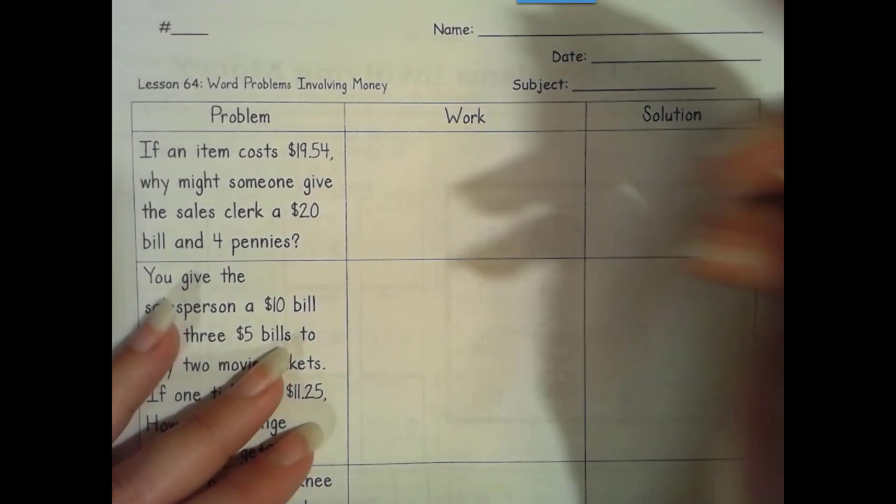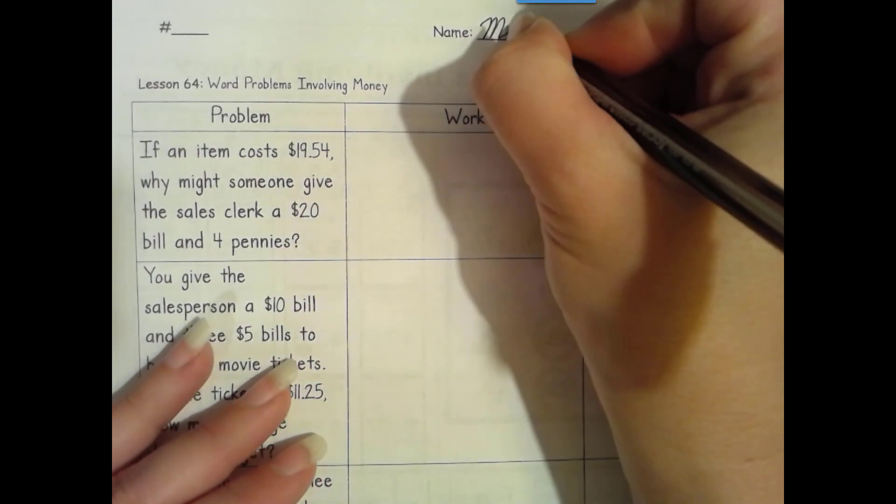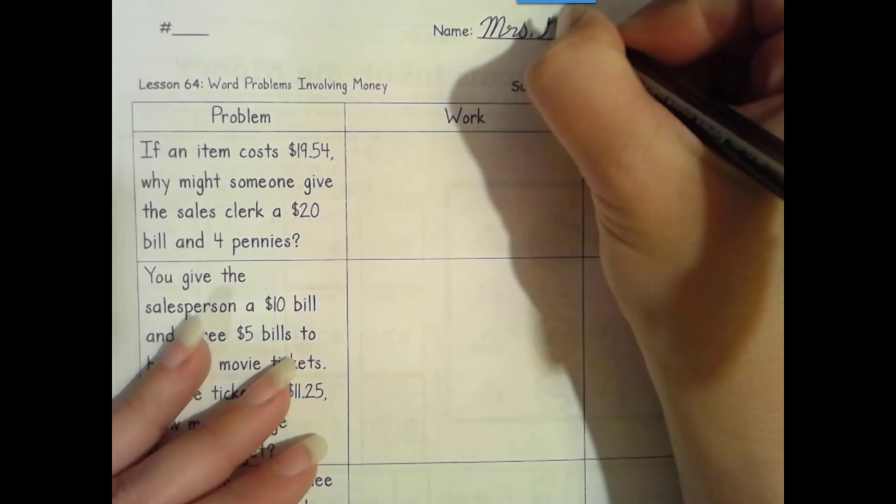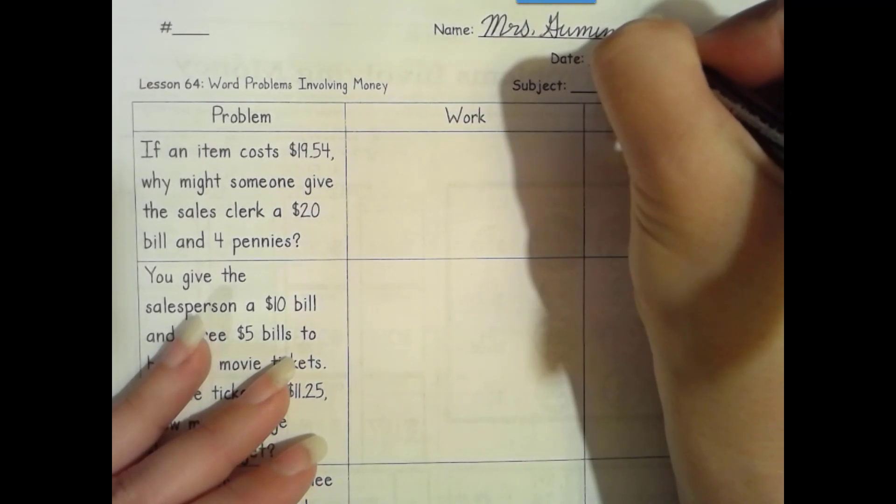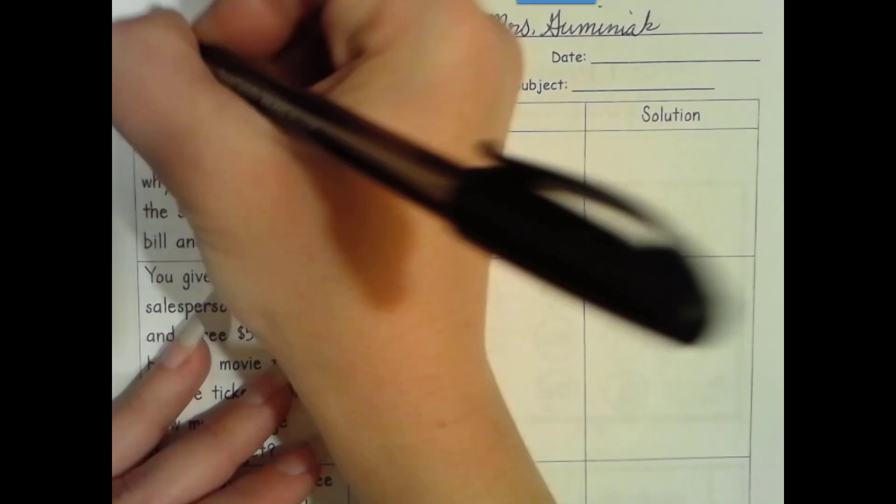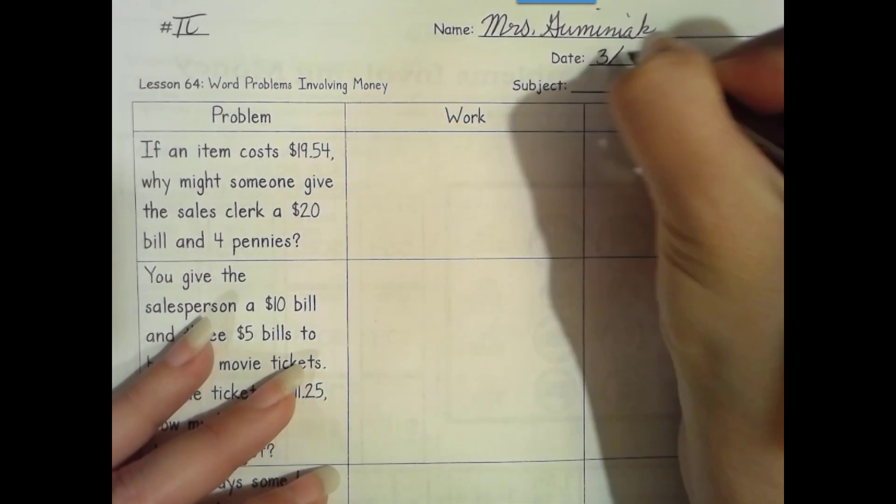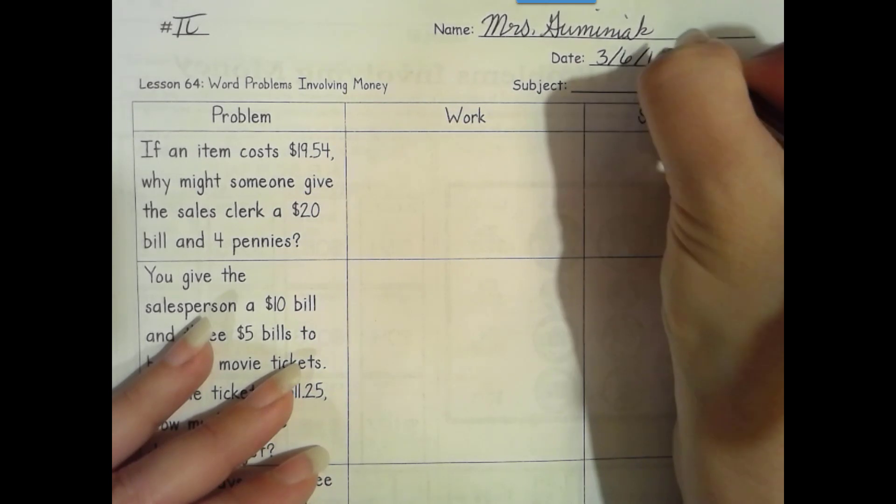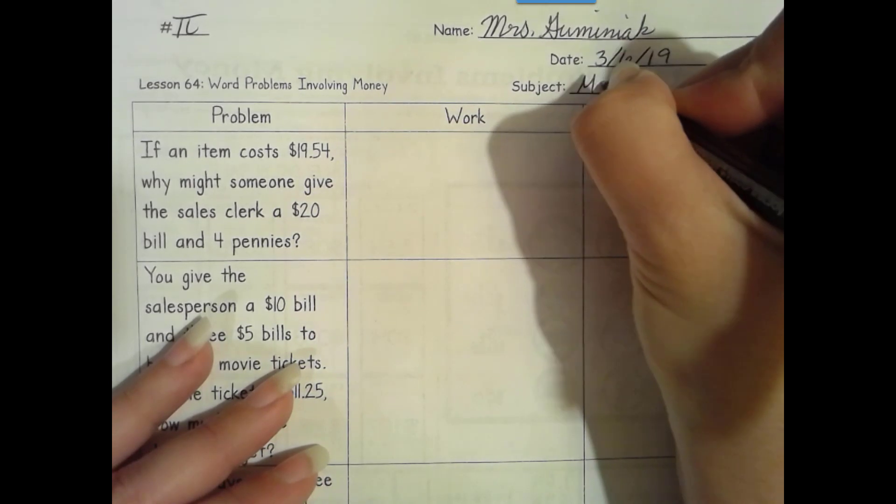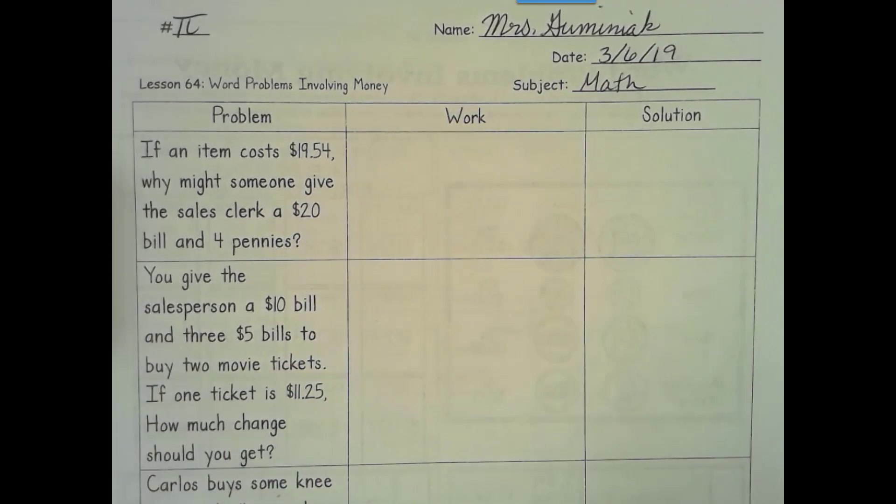Okay, now we're on to part two with our three column notes. First thing we need to do is fill in our heading: name, number, date, first and last in cursive.